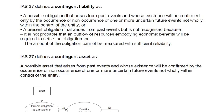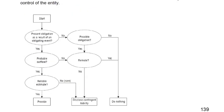To summarize: a provision is recognized when all three conditions are met — present obligation, probable outflow, and reliable estimate. A contingent liability is only disclosed in the notes to the accounts when one or two of the three conditions are not met, such as when there is only a possible obligation, no probable outflow, or no reliable estimate.